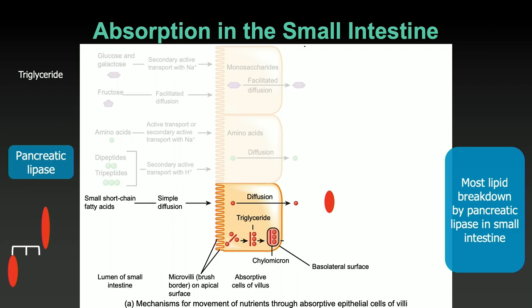At this level, we have ready-for-transport monosaccharides, amino acids, and short-chain fatty acids — all of these have easily transported across the membranes of these microvilli. They enter the capillaries, enter the blood, and are delivered to the liver. The liver will process them if it needs to, take them out of circulation, repackage them, and send them on their way.